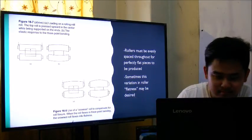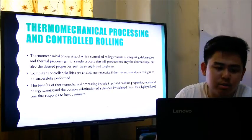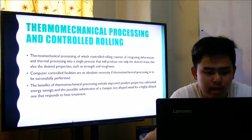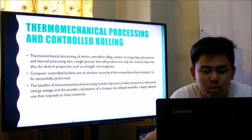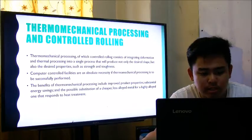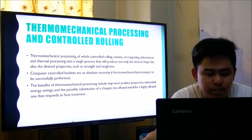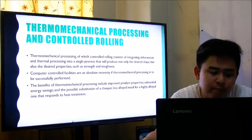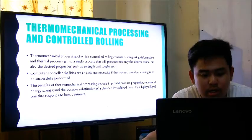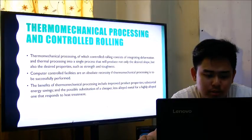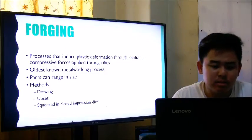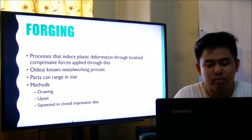Thermo-mechanical processing, of which controlled rolling is an example, integrates deformation and thermal processing into a single process that produces not only the desired shape but also the desired properties such as strength and toughness. Computer-controlled facilities are an absolute necessity for thermo-mechanical processing to be successfully performed. Benefits include improved product properties, substantial energy savings, and a possible substitution of a cheaper, less-alloyed metal for a highly alloyed one that would otherwise require heat treatment.